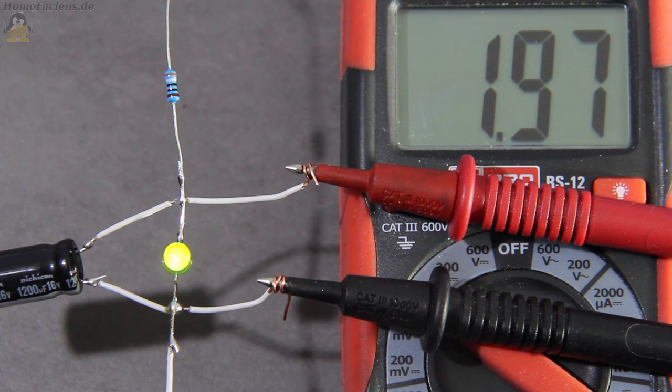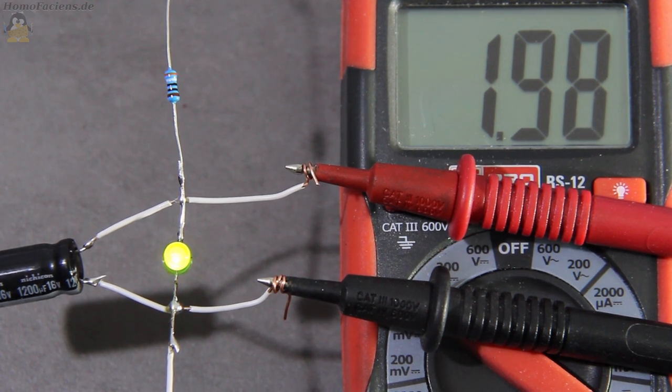If the voltage continues to rise to around 2V, the LED lights up brighter.